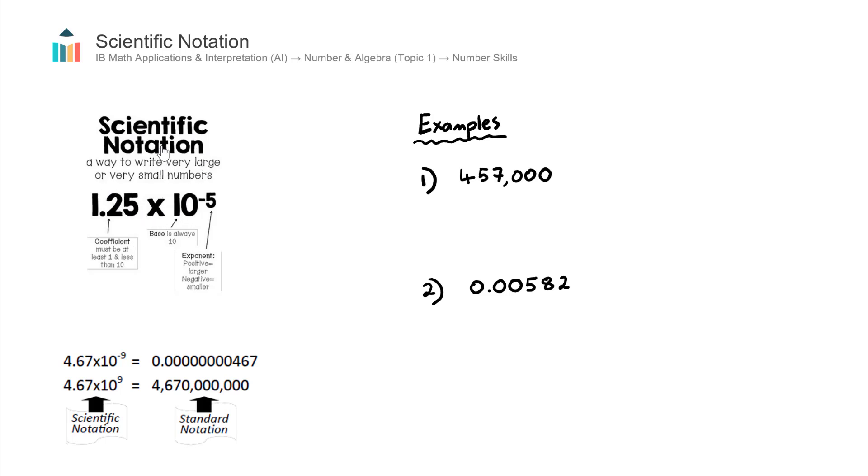Scientific notation is a way to write out very large or very small numbers. Rather than have to write out all of the digits, we can write them in a more concise, compressed form. Very useful if you're writing out, say, the distance from the Earth to the Sun, that's a very long number, or maybe the diameter of a cell in the body, that's a very small number. It's easier to actually write it out in scientific notation.